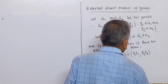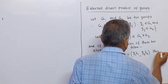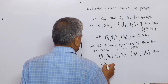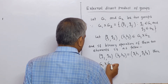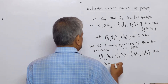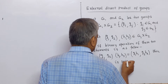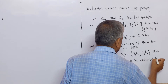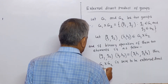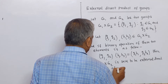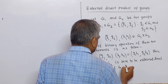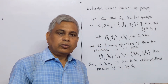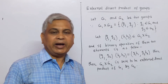(g1, g2) · (h1, h2) = (g1·h1, g2·h2). Then the Cartesian product G1 × G2 is said to be the external direct product of G1 and G2. Now we shall show that under this binary operation, the external direct product of G1 by G2 is a group.